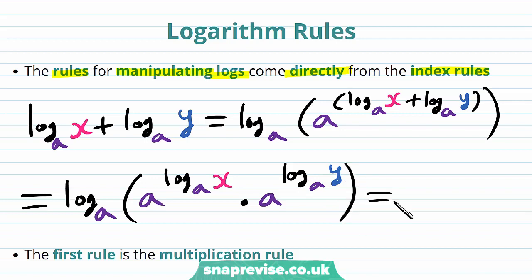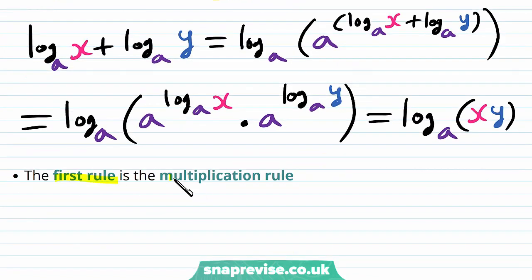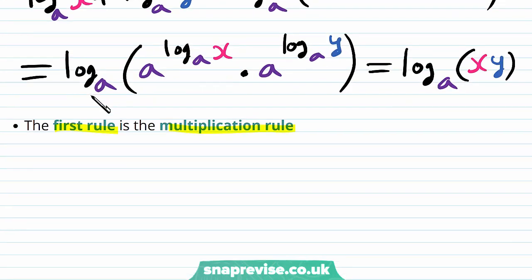And then again, we can use the inverse definition. a to the power of log base a of x is just x, because a to the power of and log base a are inverse functions. And similarly, for a to the power of log base a of y, we just get y. So this is going to become the log base a of x times y. So our first rule is the multiplication rule, as we just derived above.